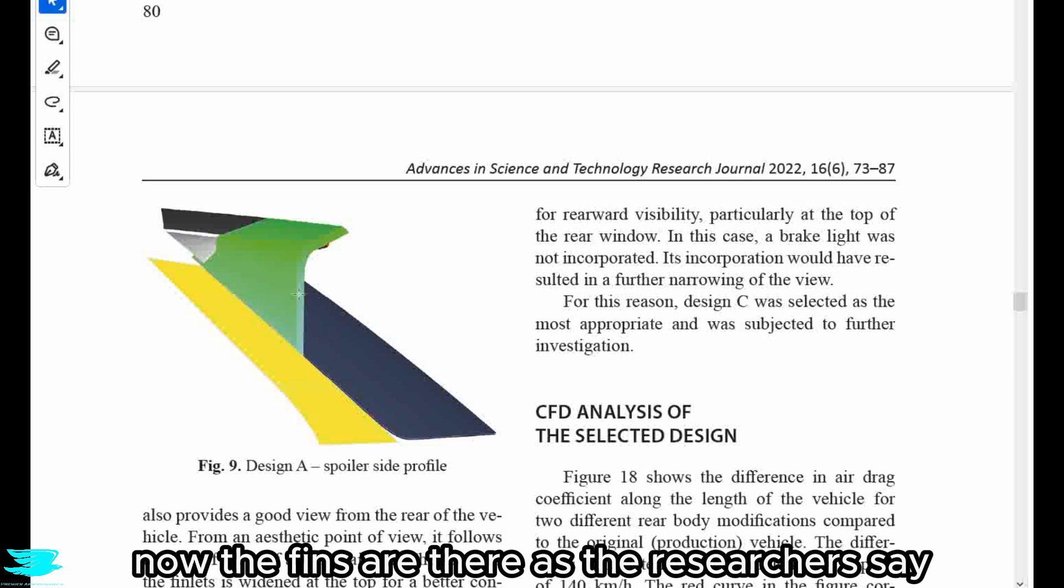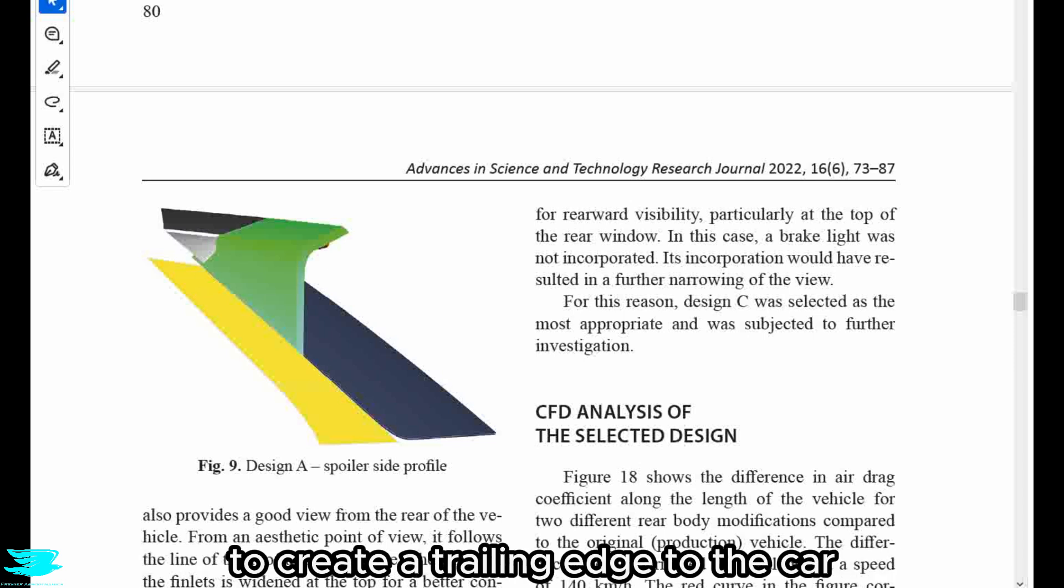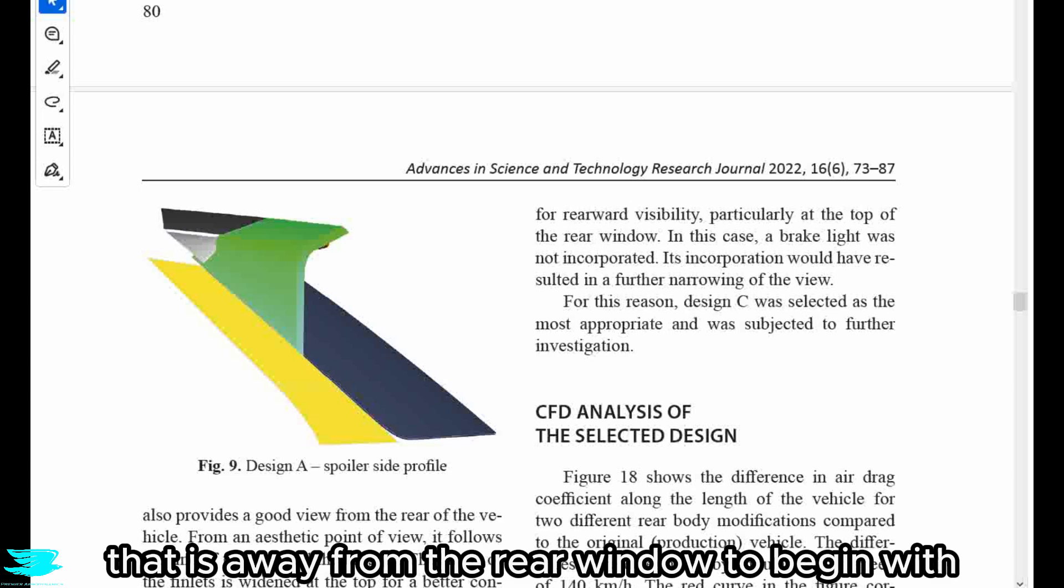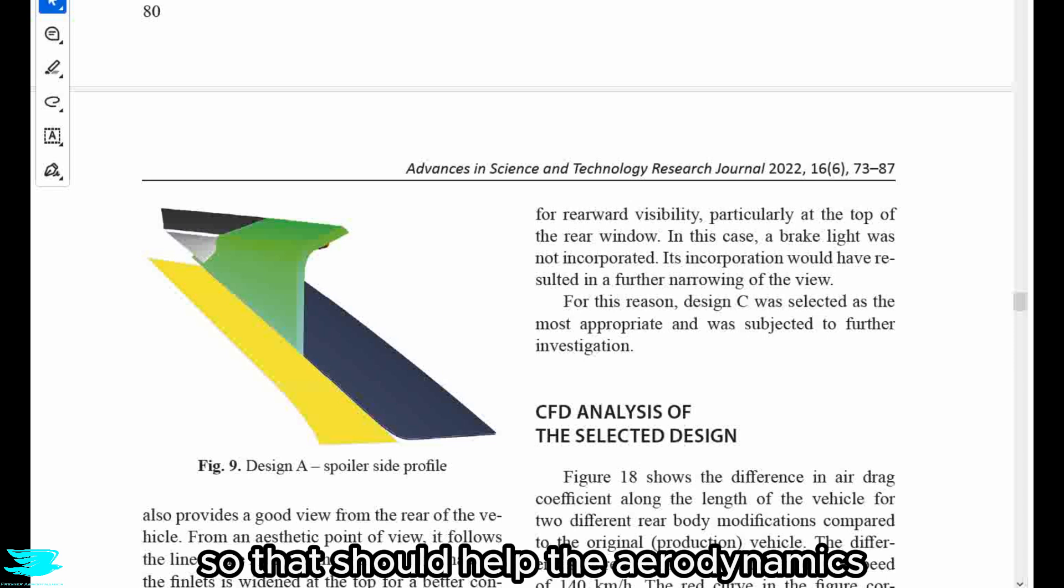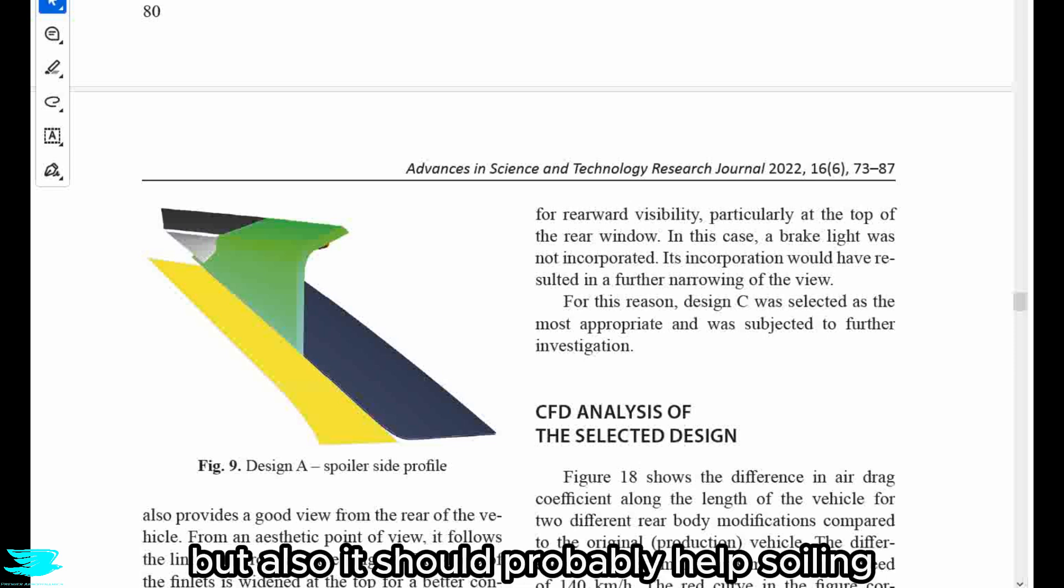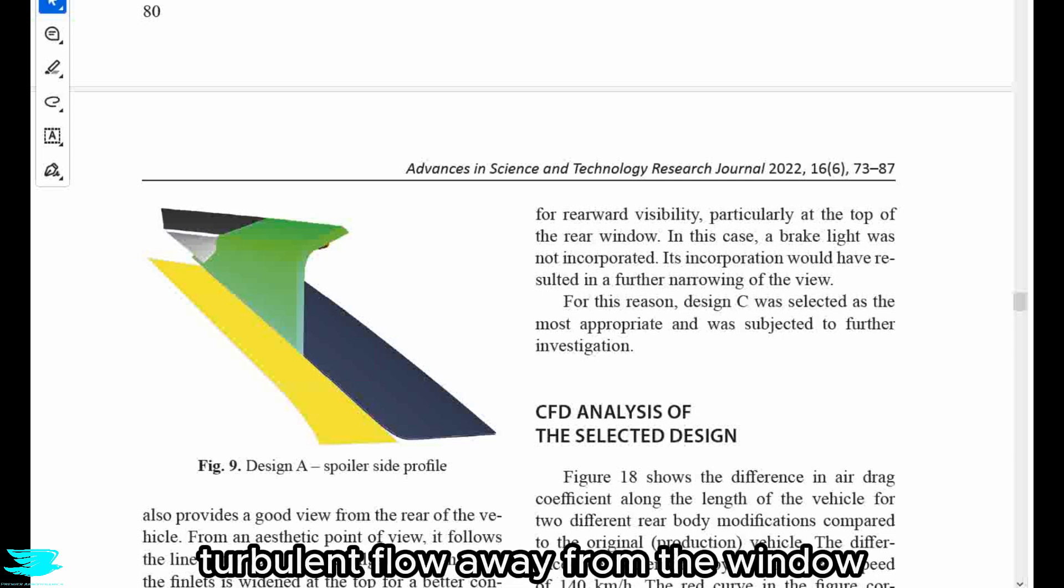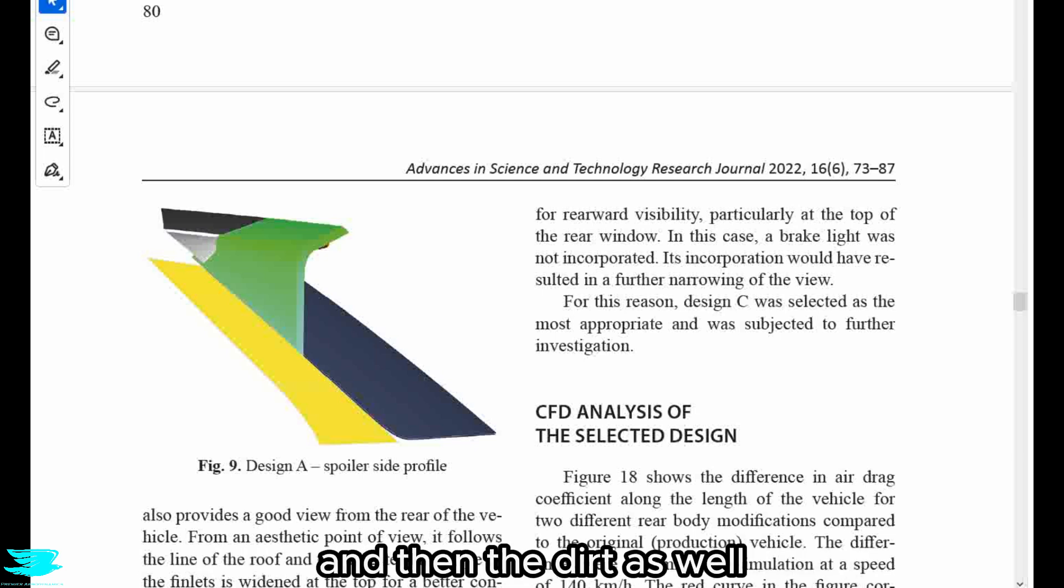Now the fins are there, as the researchers say, to create a trailing edge to the car that is away from the rear window to begin with. And then that helps prevent turbulent flow near the glass. So that should help the aerodynamics—we'll see if it does. But also it should probably help soiling because it keeps the highly turbulent flow away from the window and then the dirt as well.